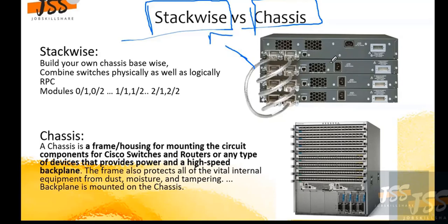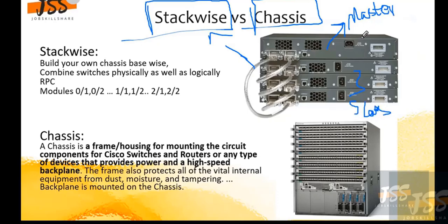As you can see, this switch is a little different from the others — that's why it's called the master, and the others are the slaves. We call it master because it has the memory, the processing power, everything. And you're wise enough to figure out — if the master goes down, everything is going to collapse.